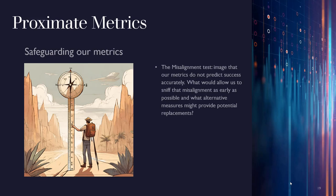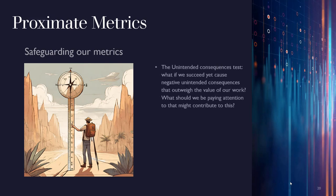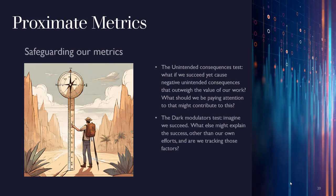We need to safeguard our metrics with several thought experiments. The misalignment test: imagine the metrics do not predict success accurately — what would let us sniff out that misalignment early, and what alternative measures might replace them? The lazy bureaucrat test: if someone wanted to succeed in this metric with the least effort possible, what would they do? This helps identify potential gaming. The unintended consequences test: what if we succeed yet cause negative unintended consequences? The dark modulators test: imagine we succeed — what else might explain the success other than our own efforts? Could something else have been causing it? Brainstorm those factors and ask: are we tracking them?